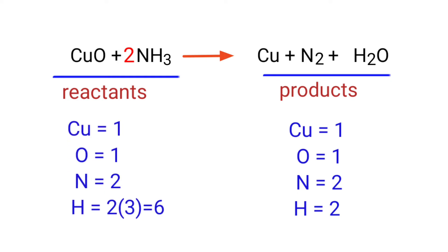The Nitrogen atoms are now balanced. Next, we need to balance the Hydrogen atoms. To do this, we need to put a coefficient of 3 in front of H2O.